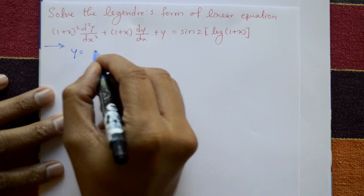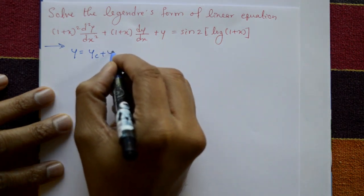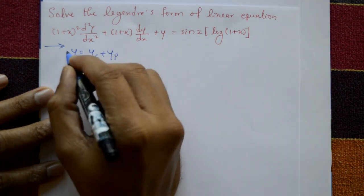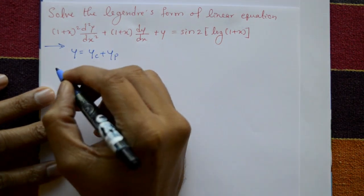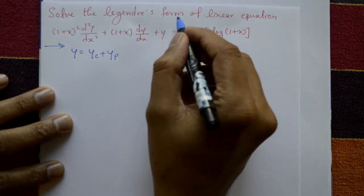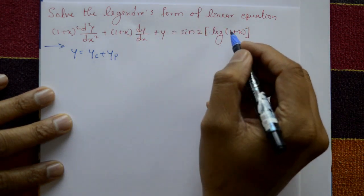The solution is y equal to complementary function plus particular integral. Add them and you get the complete solution. Now, before using the Legendre linear equation steps.